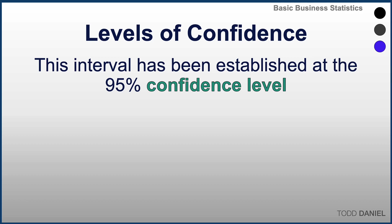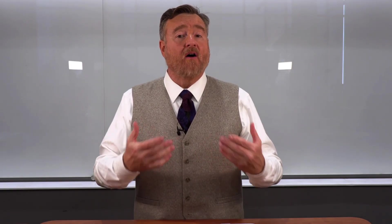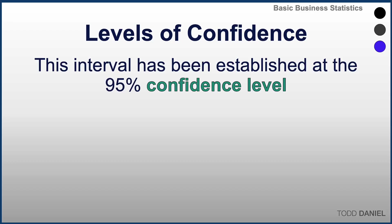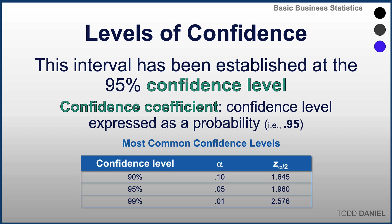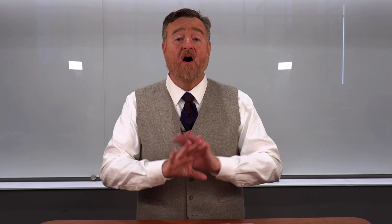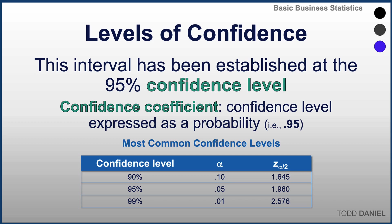The z sub .95 of positive or negative 1.96 is our margin of error. This interval has been established at the 95% confidence level. The confidence coefficient is the confidence level expressed as a probability — for instance, .95. The most common confidence levels are 90%, 95%, and 99%. The confidence level and the alpha level are always inverse — they add up to 1. For a confidence level of 90%, the alpha is .10. At a 95% confidence level, our alpha level is .05.